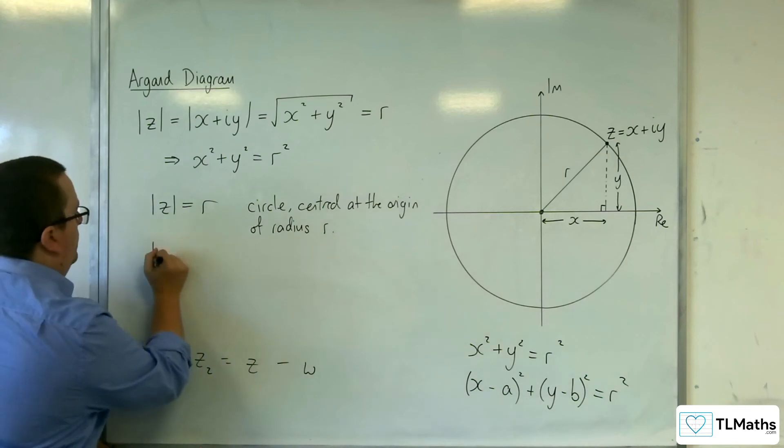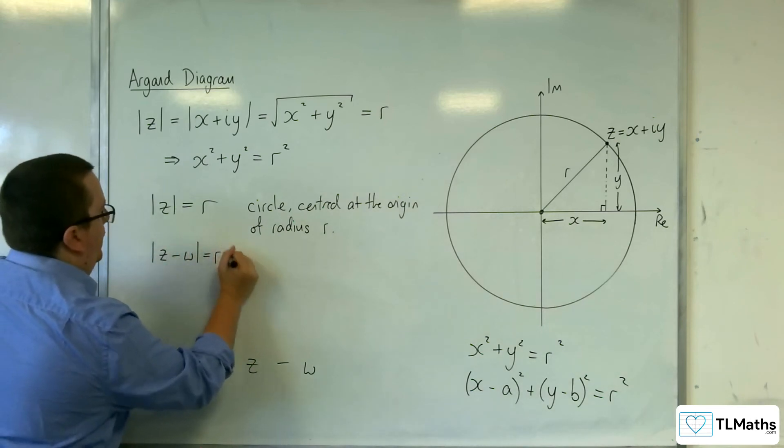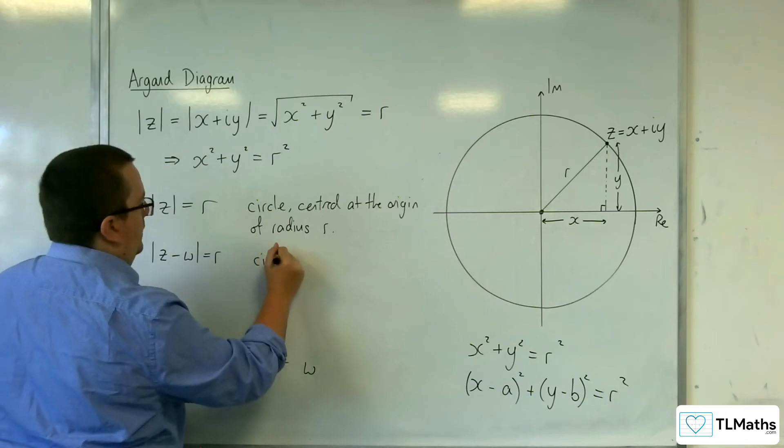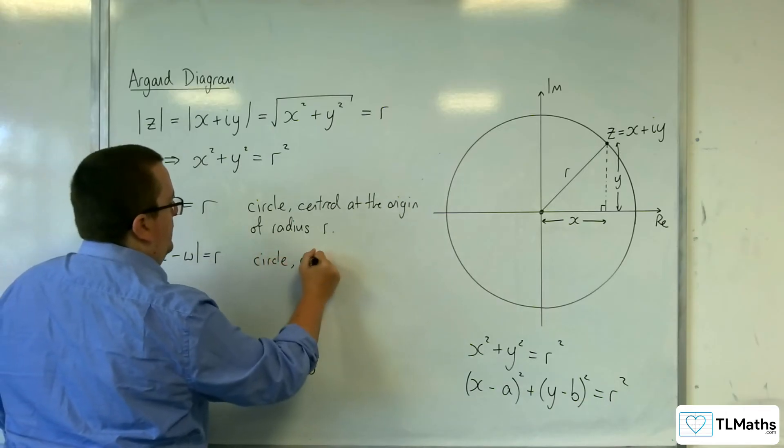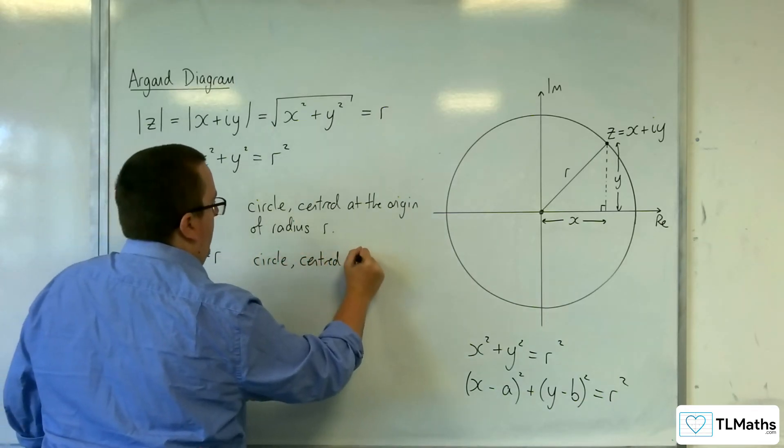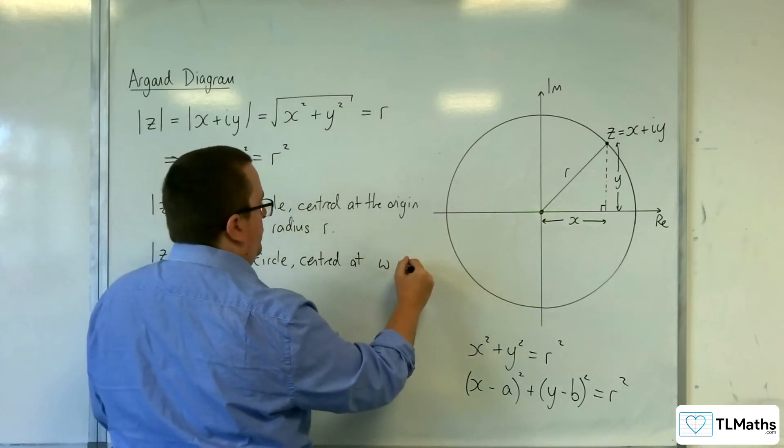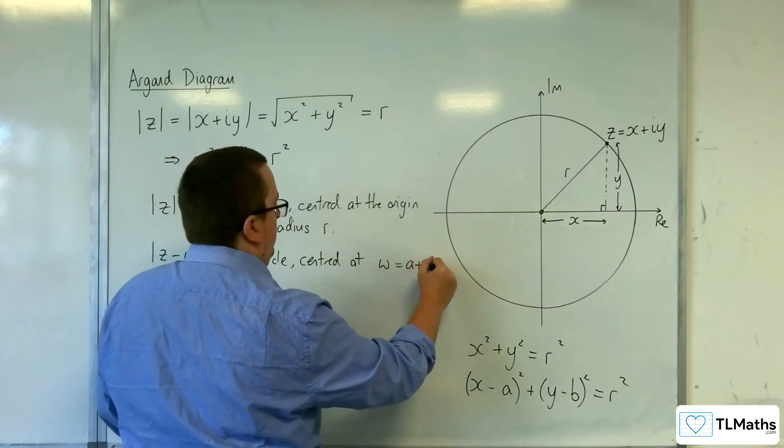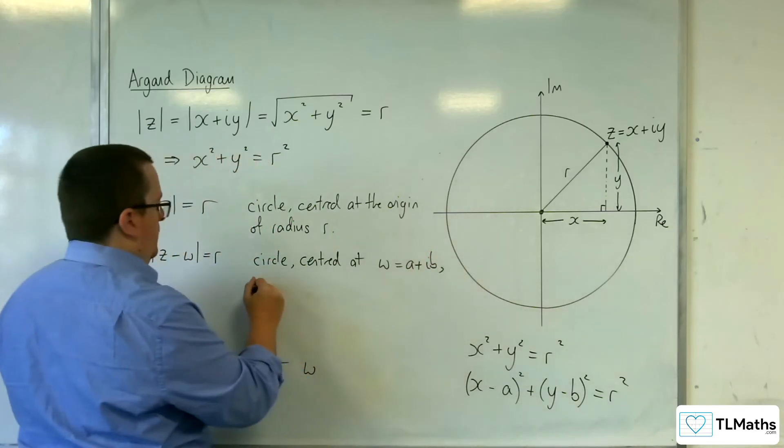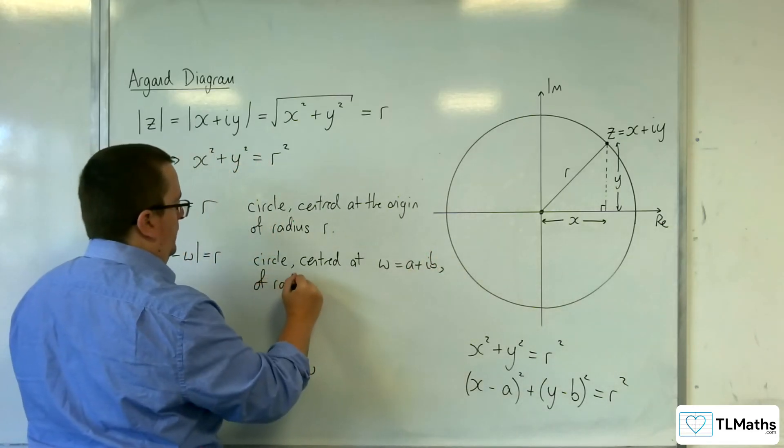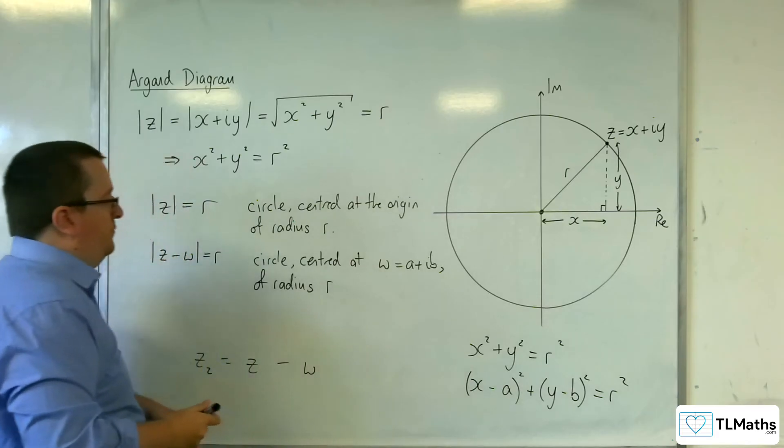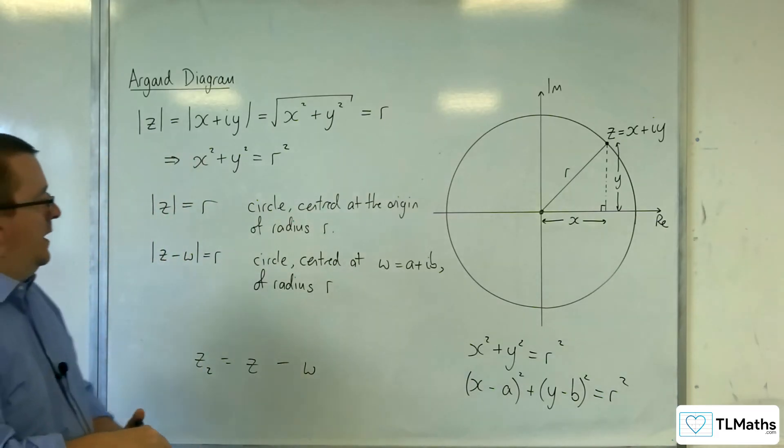So, |z - w| equals r is a circle centred at w, which can be equal to your a plus ib, of radius r.